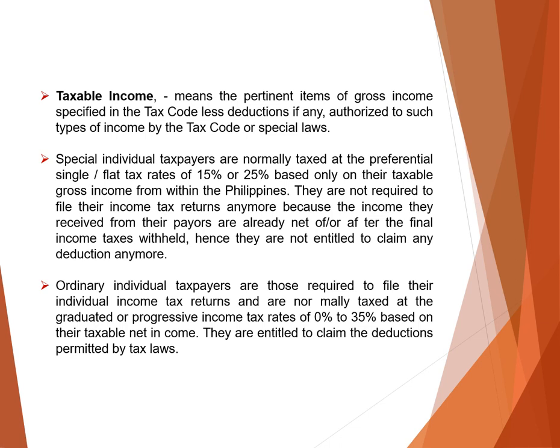Taxable income means these are the pertinent items of gross income, less deductions, if any. This is the basis for computing how much tax an individual pays. Special individual taxpayers are normally taxed at a preferential flat tax rate of 15% or 25% — meaning the percentage is fixed.